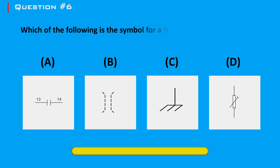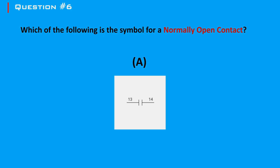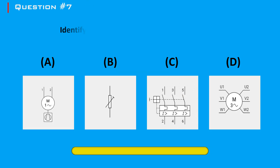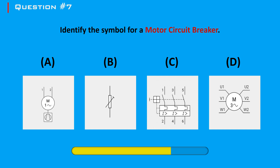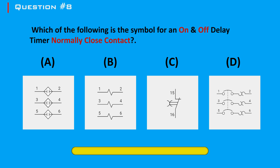Question 6: Which of the following is the symbol for a normally open contact? The answer is A. A normally open (NO) contact is a type of electrical switch contact that remains open or disconnected when the switch is in its default or normal state. Question 7: Identify the symbol for a motor circuit breaker. The answer is C. A motor circuit breaker (MCB) is a specialized type of circuit breaker designed to protect electric motors from electrical faults and overloads. Question 8: Which of the following is the symbol for an on and off delay timer normally closed contact? The answer is C.